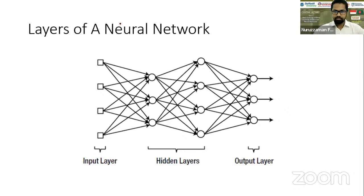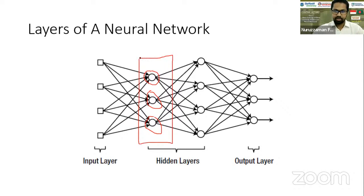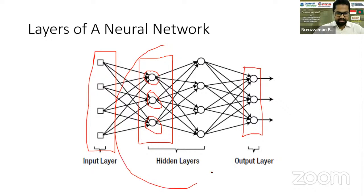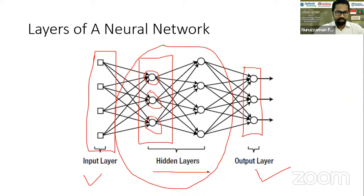What do we call a layer? A layer consists of nodes. The first layer is called the input layer. The final layer is called the output layer. And the layers in between the input and output are called the hidden layers. So input layer, output layer, and hidden layers together form the neural network. Now let's look at how their orientation creates variations.